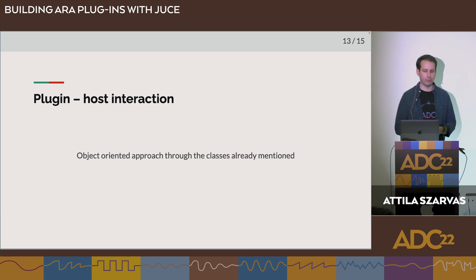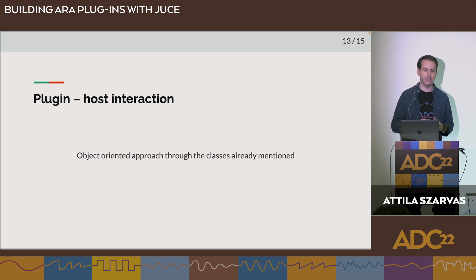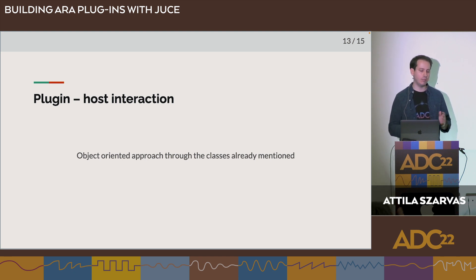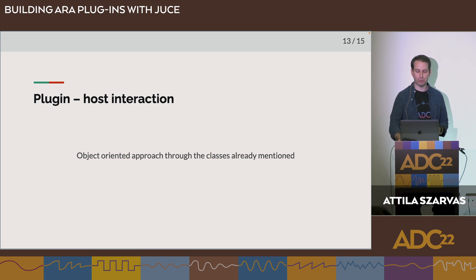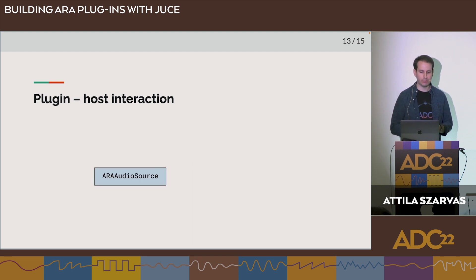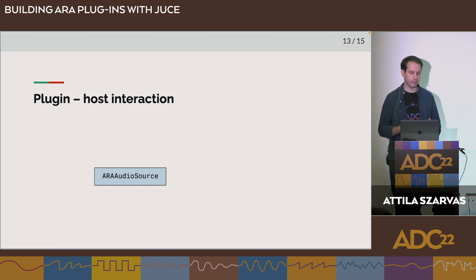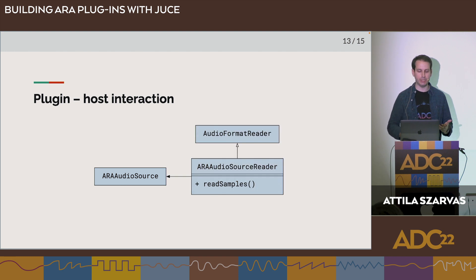The host also provides an interface with functions the plugin can call, available in an object-oriented way through the classes already mentioned. For example, to read the audio samples of an ARA audio source, you wrap it into an ARAAudioSourceReader — which is a JUICE AudioFormatReader class — and then call the read samples functions.